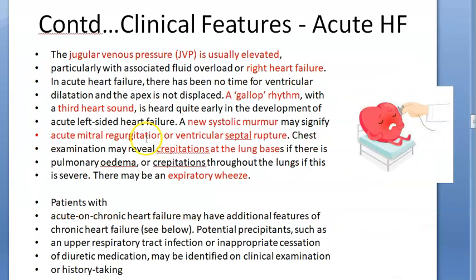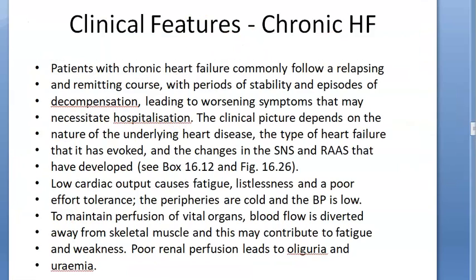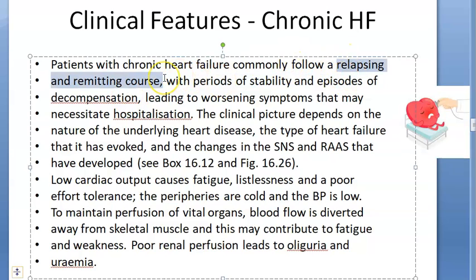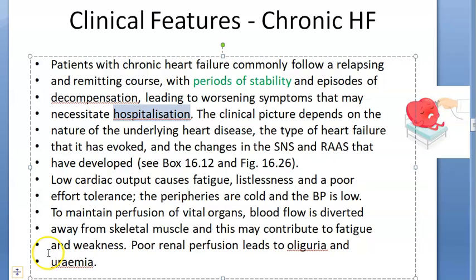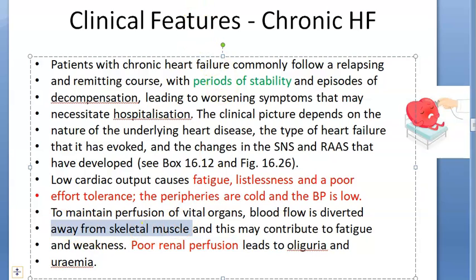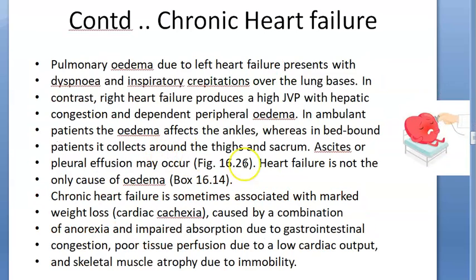Now let us go to chronic heart failure. Chronic conditions have a relapsing-remitting course with periods of stability and decompensation — worsening of symptoms — and they will require hospitalization. These people will have fatigue, poor effort tolerance, cold peripheries, and low BP. The body tries to send cardiac output to vital organs, sending less blood to skeletal muscles and kidney. Less skeletal muscle perfusion means weakness; poor renal perfusion means oliguria.